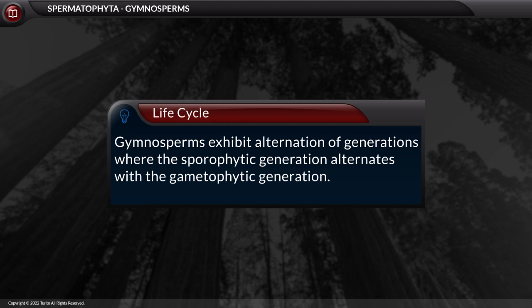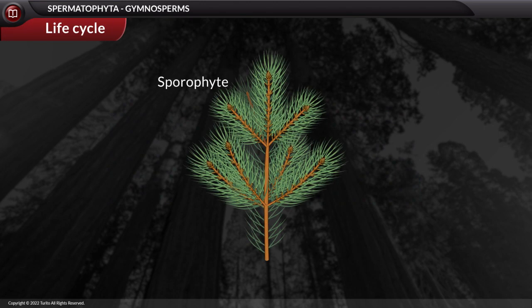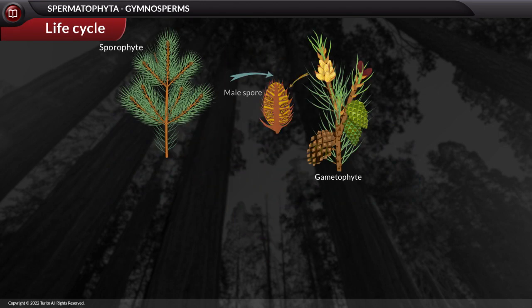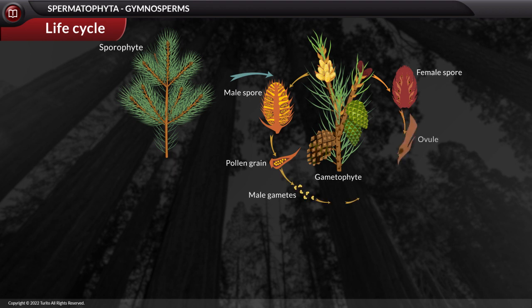Gymnosperms exhibit alternation of generations, where the sporophytic generation alternates with the gametophytic generation. Being heterosporous, gymnosperms generate both male and female spores that develop into the male gametophyte — the pollen grain bearing male gametes — and the female gametophyte — the ovule bearing female gametes. During pollination, air currents carry the pollen grains towards the ovule.